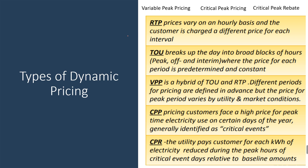There are different types of dynamic pricing. First is real-time pricing, where prices vary on an hourly basis and the customer is charged a different price for each interval. Second is time-of-use pricing, where the complete duration is broken into blocks of hours — peak, off-peak, and interim — and the charge varies per block. Third is variable peak pricing, a hybrid of time-of-use and real-time pricing, where different pricing periods are defined in advance but the peak price varies by utility and market condition, while the remaining duration has a flat price.